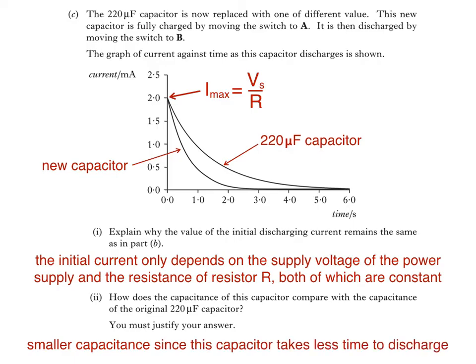Decreasing the resistance of resistor R would also cause the capacitor to discharge in a shorter time, although this would also increase the initial maximum current.